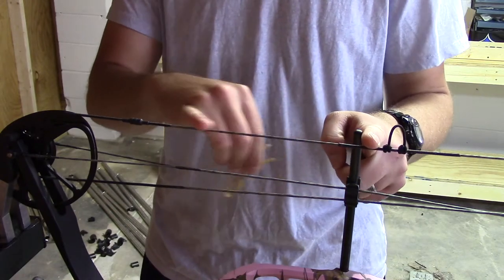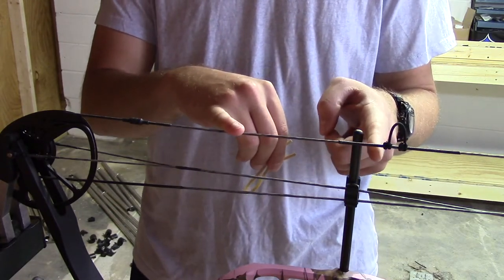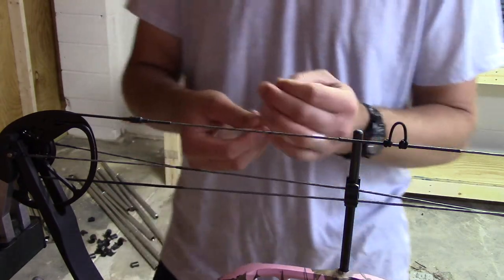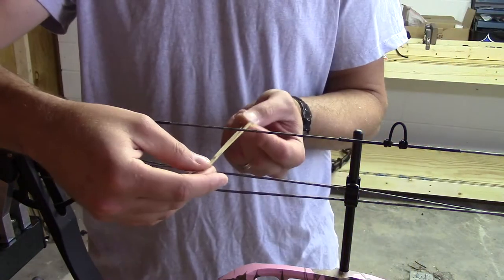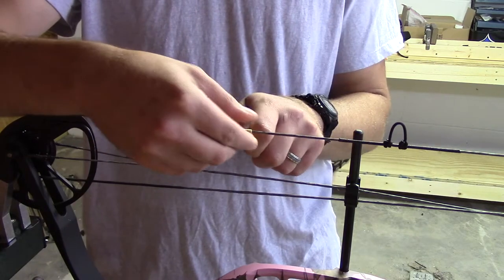Now I've been shooting a long time. I'm pretty sure I know exactly from the top knot of my D loop where my peep sight is going to be. I'm going to put the rubber band, same trick, I'm just going to loop it around through, just kind of cinch it down lightly.